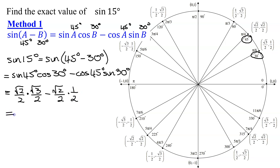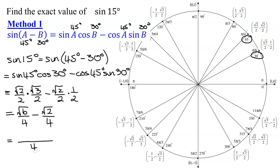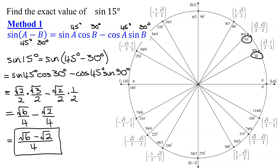Simplifying this expression, I get the square root of 2 times the square root of 3, which is the square root of 6, all divided by 2 times 2 is 4, minus the square root of 2 times 1 is just the square root of 2, all divided by 4. The denominators are the same, so I can write everything over a common denominator of 4. The square root of 6 and the square root of 2 are unlike terms, so the numerator is just the square root of 6 minus the square root of 2. This is one version of the exact value of the sine of 15 degrees.